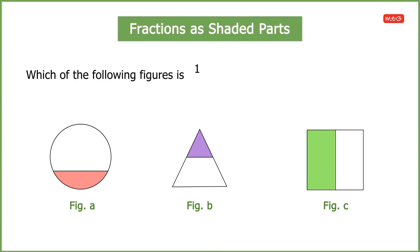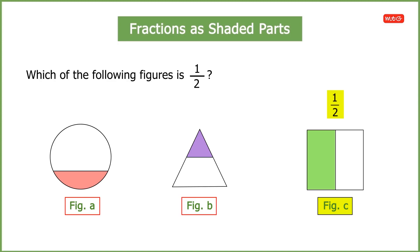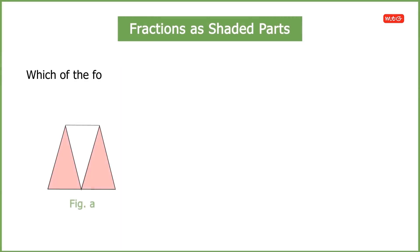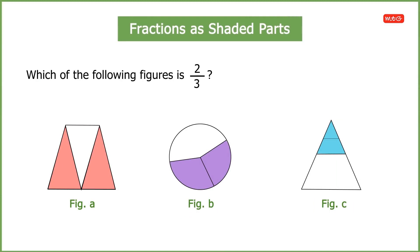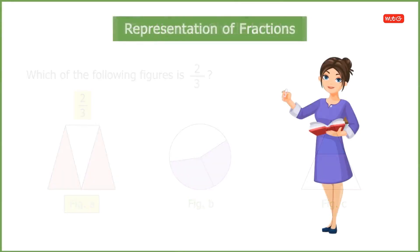Can you tell me which of the following figures represents 1 by 2, or half? Figure C represents 1 by 2, but figures A and B do not. The reason is that figures A and B are not divided into equal parts. Now, which figure represents 2 by 3, or two-thirds? Figure A represents 2 by 3, as two out of three of its equal parts are shaded.